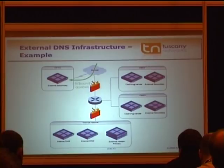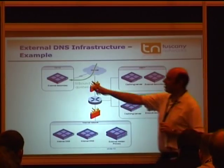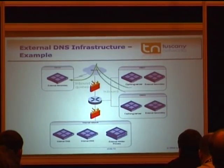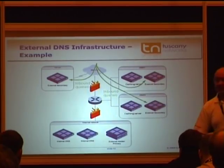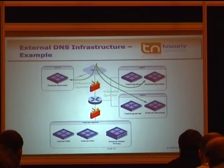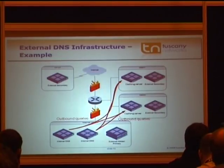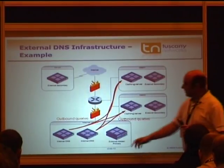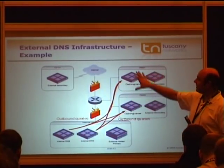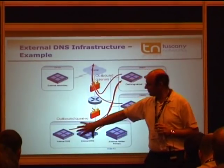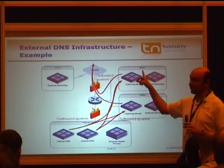Inbound queries would typically favor the co-located server because it will probably have better connectivity at an ISP, but inbound queries could also come to your external secondaries on the DMZ, so you've got full resilience. For your internal DNS, queries to resolve names like Cisco.com and Microsoft.com are sent through to caching servers on the DMZ, and then those caching servers forward the queries out to the internet. There's never any direct communication from your internal DNS out to the internet — it all goes via the DMZ, keeping everything nice and secure.